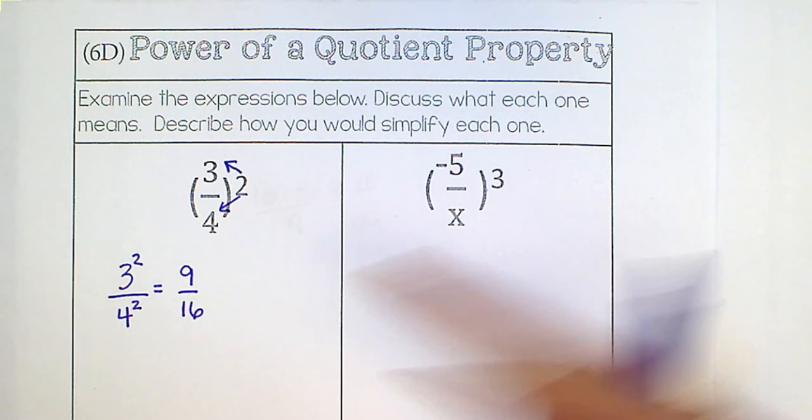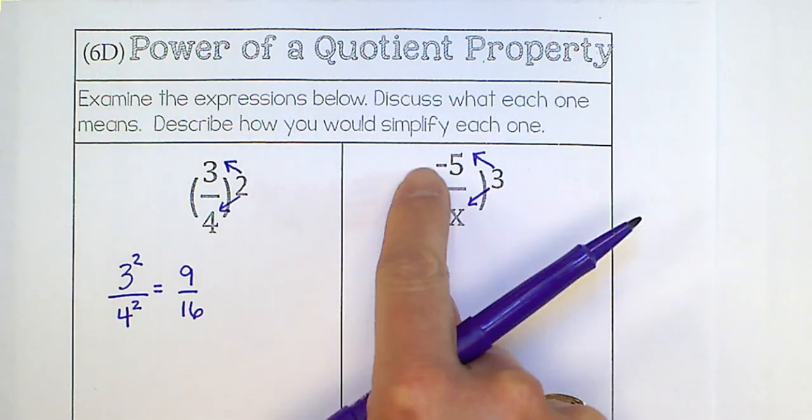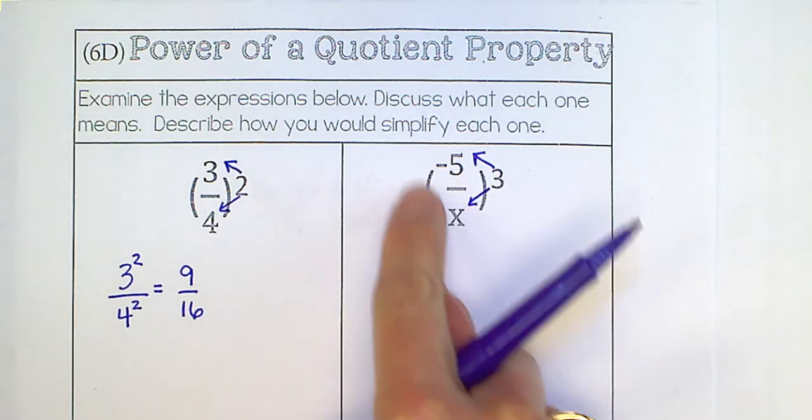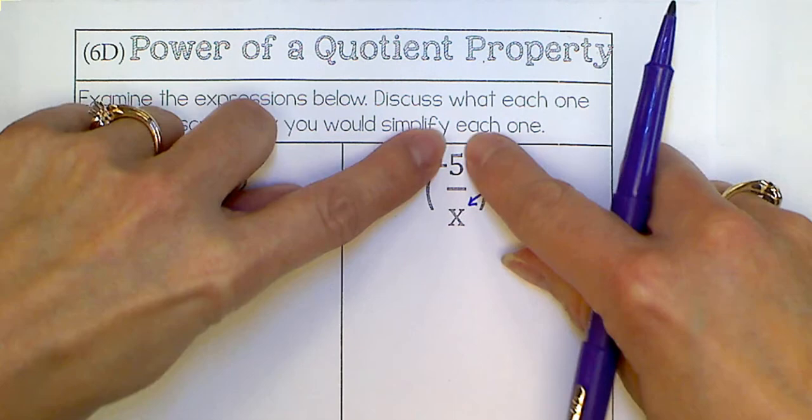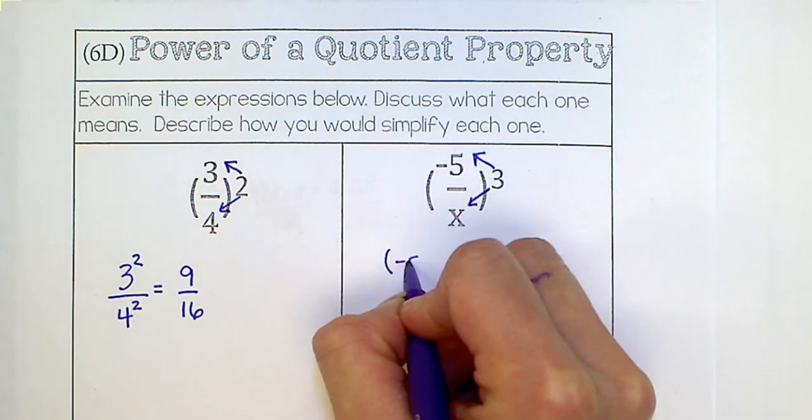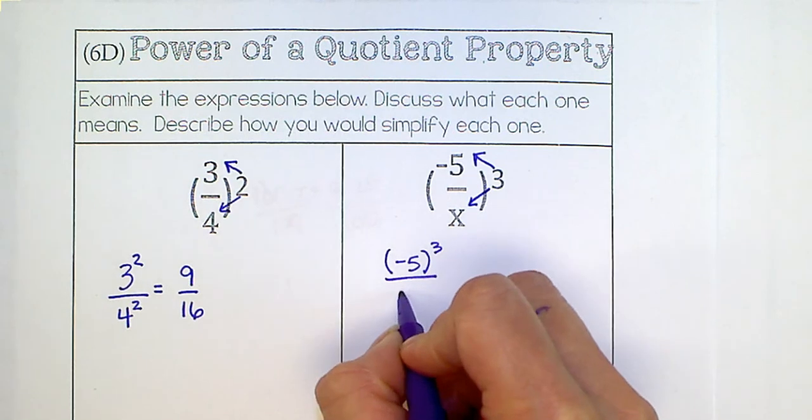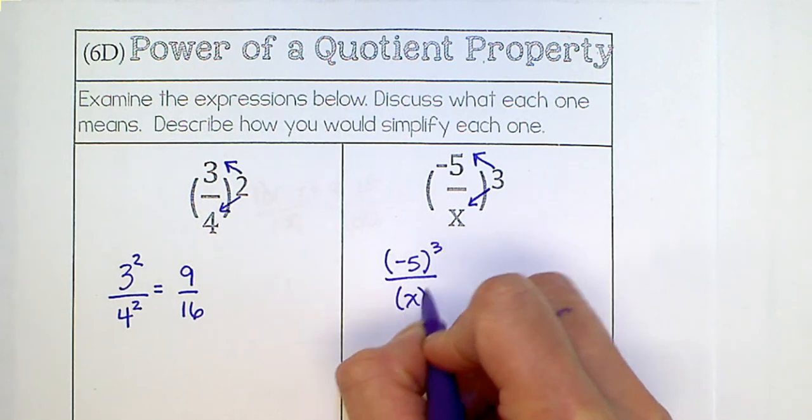For this example, we're going to have negative 5 to the 3rd and x to the 3rd. Now look, this negative 5 is in parentheses, so this parentheses is for this entire fraction. So you need to keep the parentheses with the negative 5 to the 3rd, and then you can put parentheses around the x to the 3rd, but that is going to be the same as x to the 3rd.